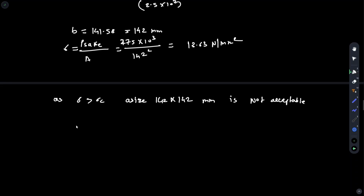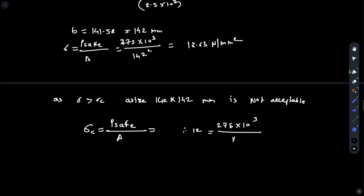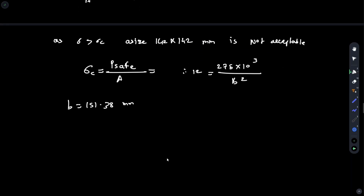For this case, we must select the cross section on the basis of its resistance to compression. So σc = P_safe / Area, giving 12 = 275 × 10³ / B². Solving, B = 151.38 mm, which is acceptable.